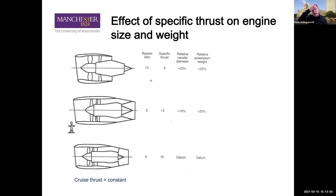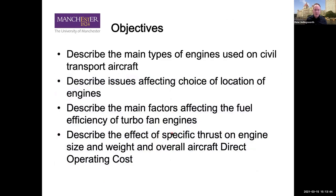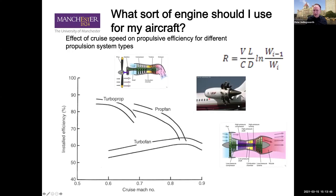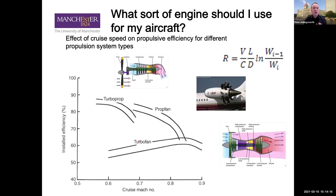Back to open rotor prop fans — why aren't they used when they're more efficient over a large range of speeds than turbofans? Higher fuel prices would drive us toward prop fans to burn less fuel. But they keep not being adopted. One reason is that fuel prices go up then come back down, making that investment risk unattractive. The biggest problem is noise — without a duct, tip losses create buzzing noise.